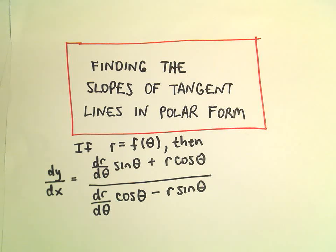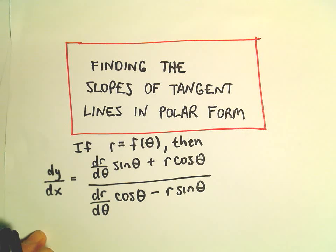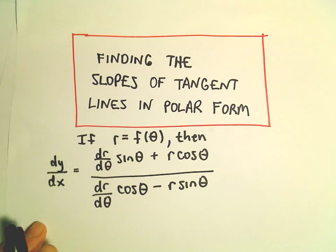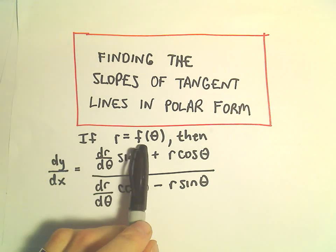All right, here we're going to start looking at some examples of finding slopes of tangent lines in polar form. So if we have a polar graph, r equals f of theta,